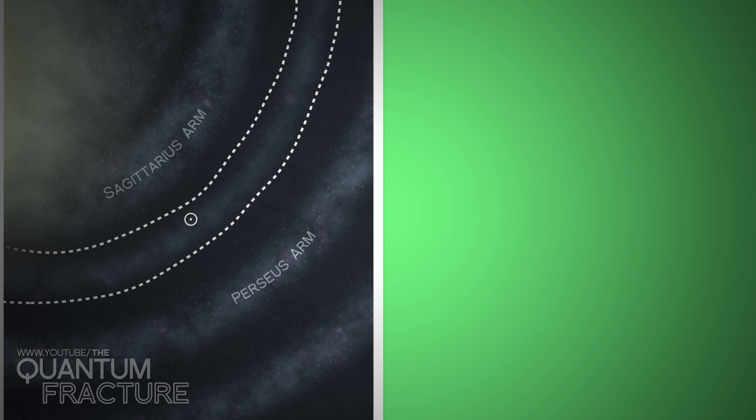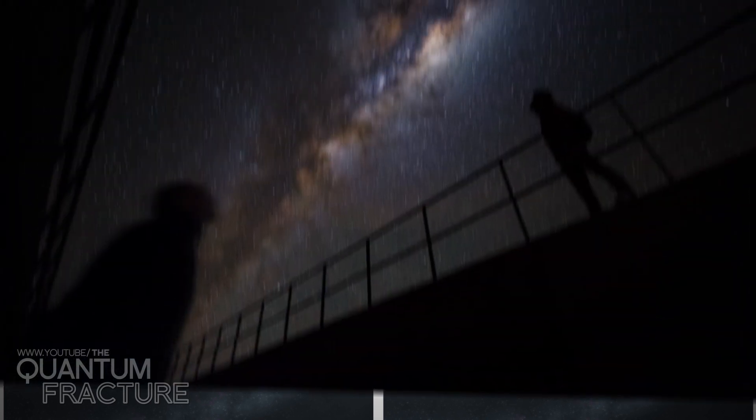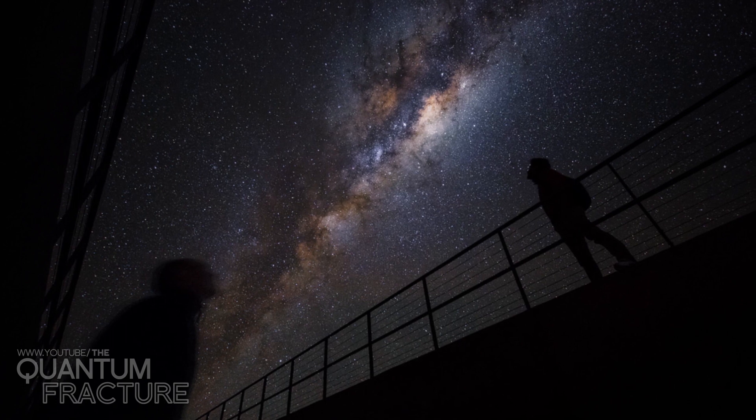Astrophysicists are debating whether the Orion arm is just like the rest or a kind of bridge between the Sagittarius and Perseus arms. Trying to figure out the shape of your galaxy when you only have a side view certainly isn't easy.